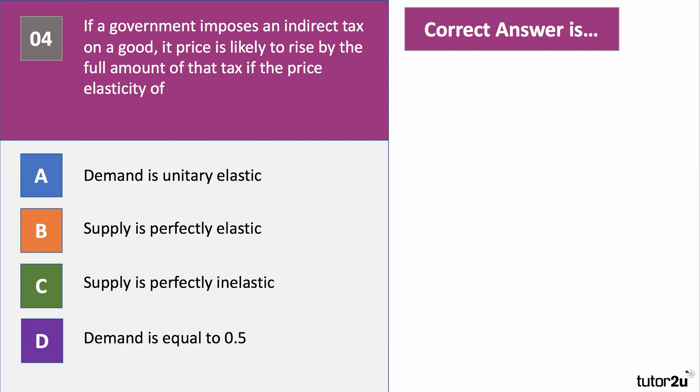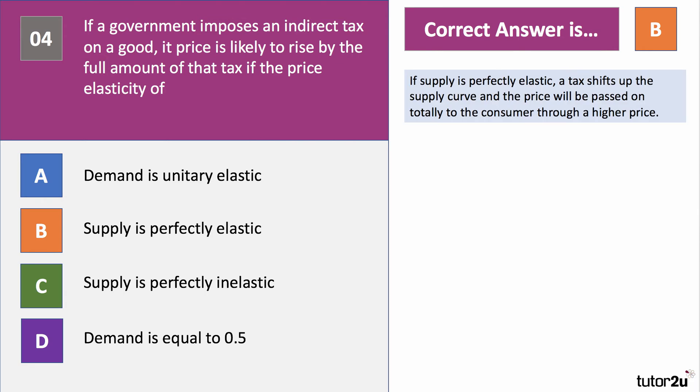The right answer is B: when supply is perfectly elastic. Any rise in tax — regardless of the elasticity of demand — will cause the price to rise by the full amount of the tax. If supply is perfectly elastic, a tax shifts the supply curve up and the price is passed on entirely to the consumer through a higher price. There's no dependency on the elasticity of demand in that situation.